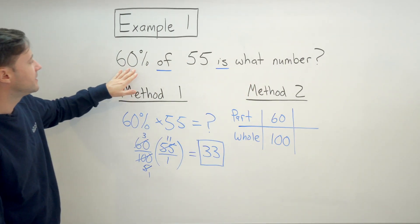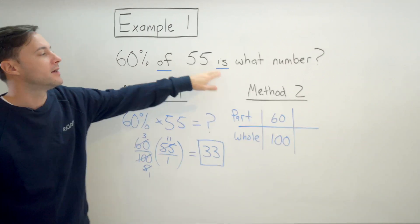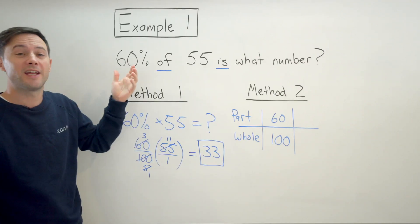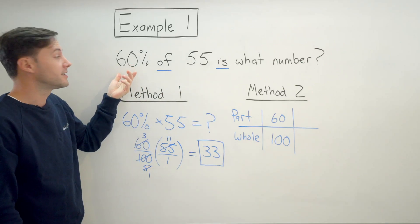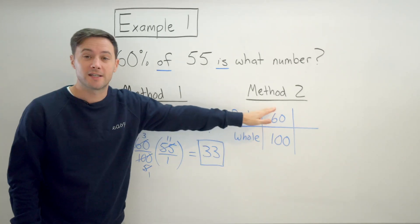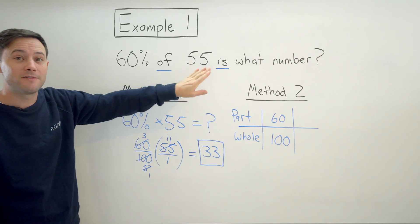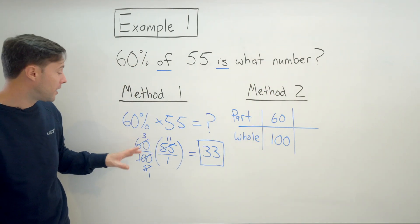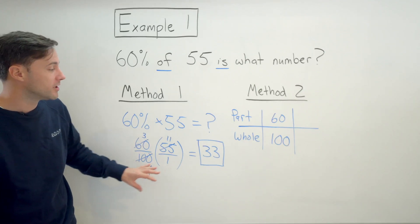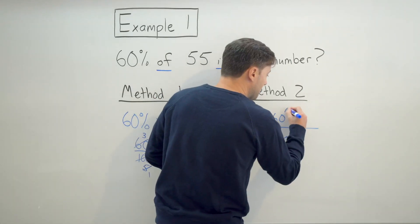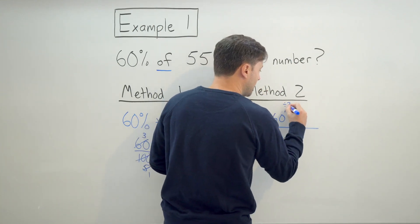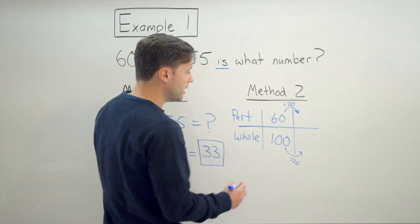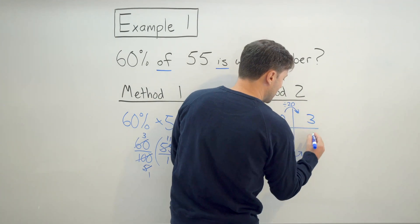Now what we're trying to do, it says 60% of 55 is what number? So 55 is the whole. What we're trying to do is find essentially an equivalent ratio to 60%, right? The ratio of 60 to 100. We're trying to find an equivalent one where 55 is the whole, and we're trying to find the part. So just like what we did in method one, we simplified that 60%, that 60 over 100. I'm going to do the exact same thing here. So I'm going to make an equivalent ratio by simplifying just like I did in method one. So divide both by 20 and I get an equivalent ratio of 3 to 5.